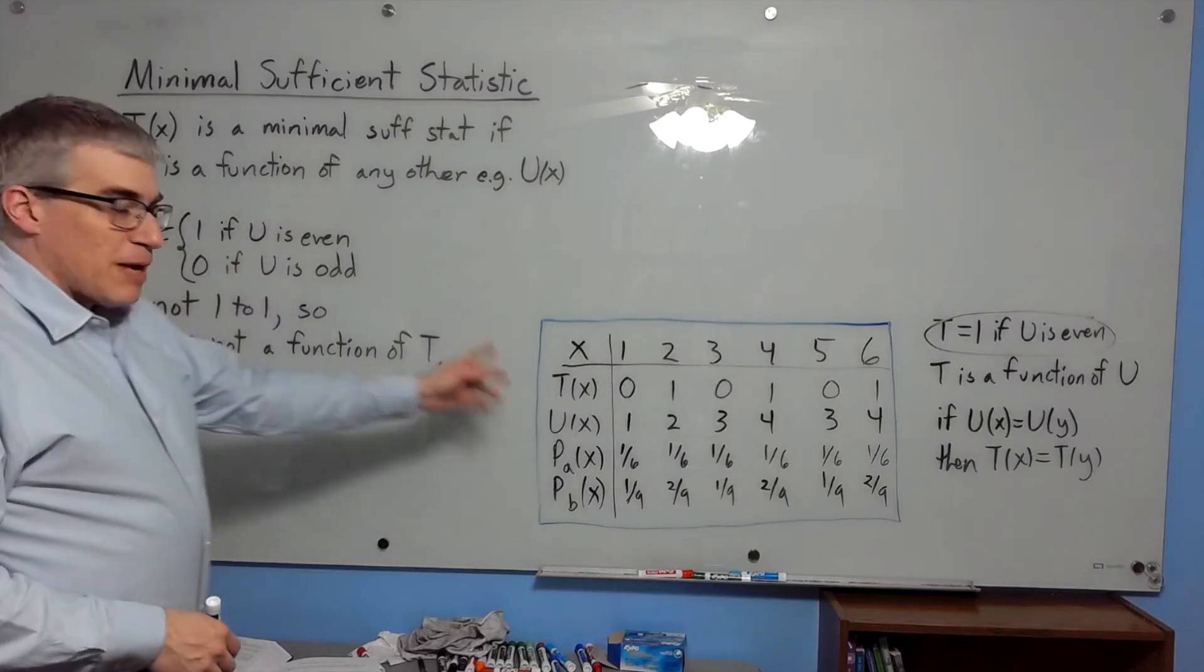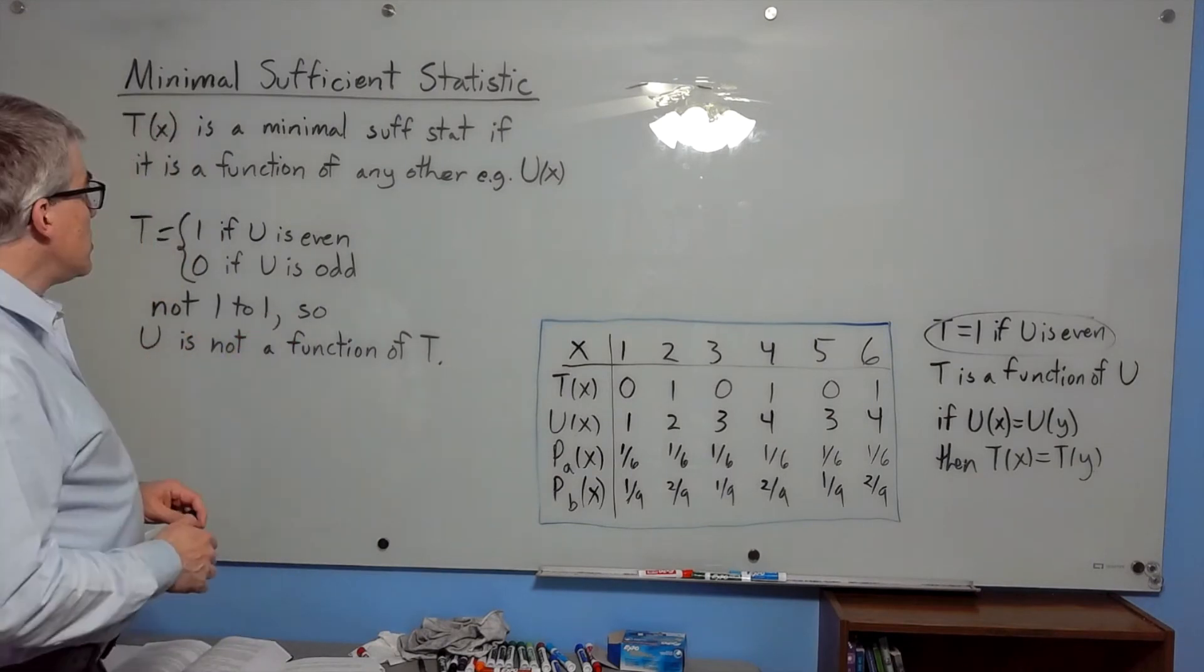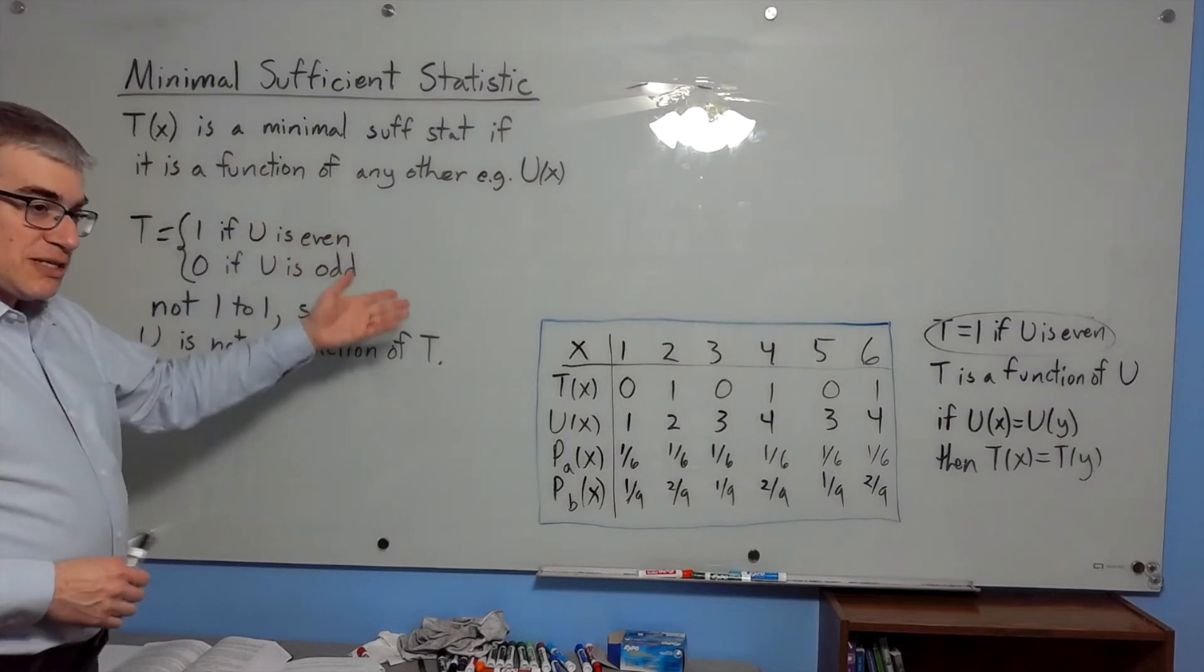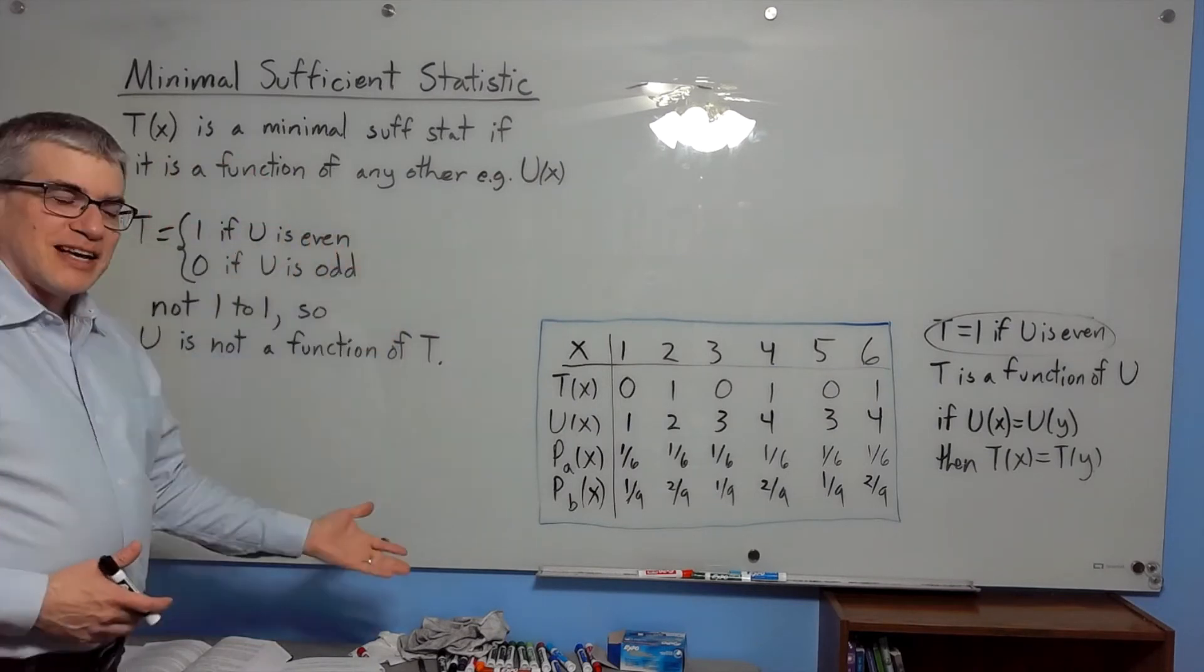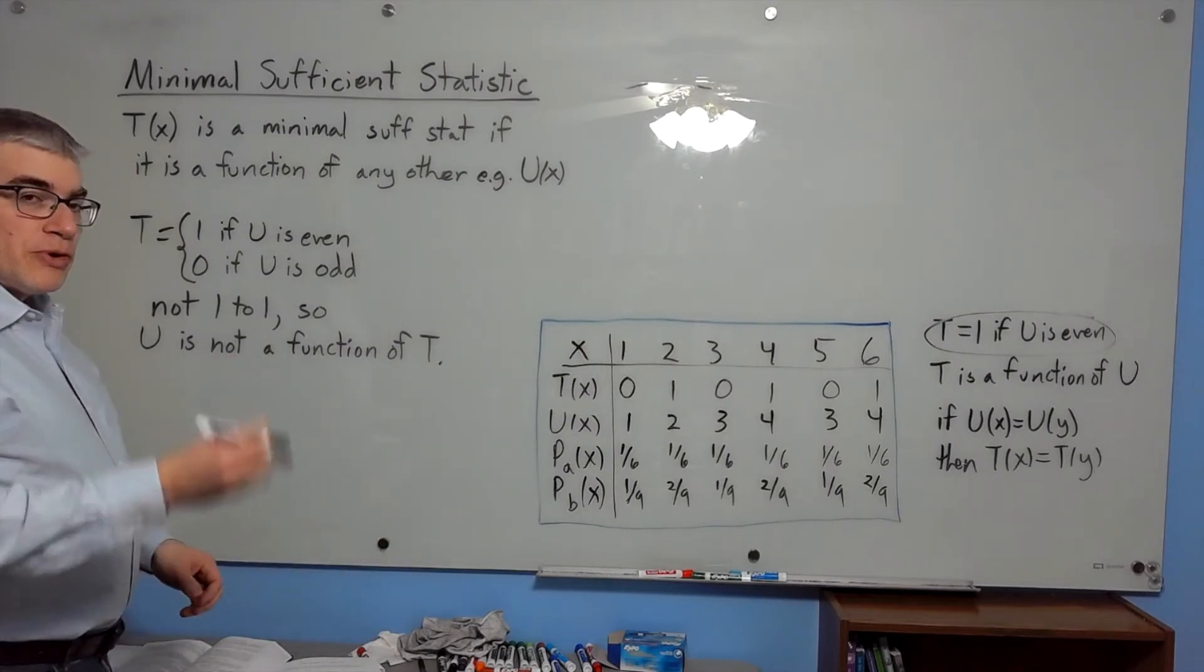However, that mapping is not one-to-one, so u is not a function of t. So t is a candidate for the minimal sufficient statistic, but this right here wasn't a proof because you can't compare with every possible sufficient statistic ever. We need a better way to tell whether or not it's minimal.